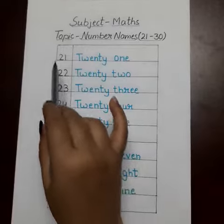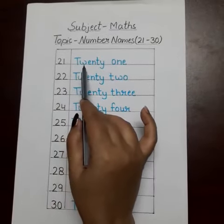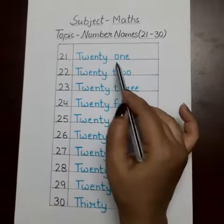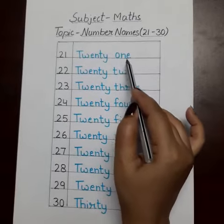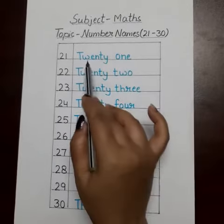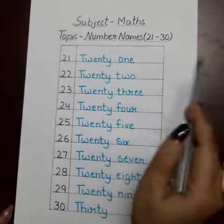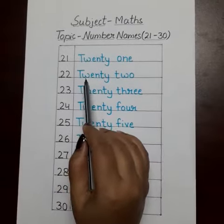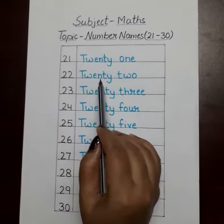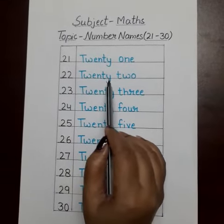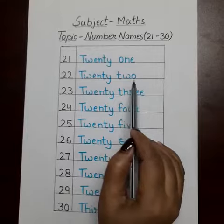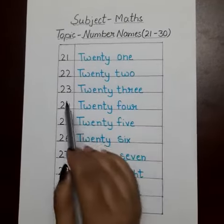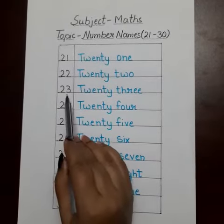Now 21: T-W-E-N-T-Y, 20; O-N-E, 1. Twenty-one. 22: T-W-E-N-T-Y, 20; T-W-O, 2. Twenty-two.